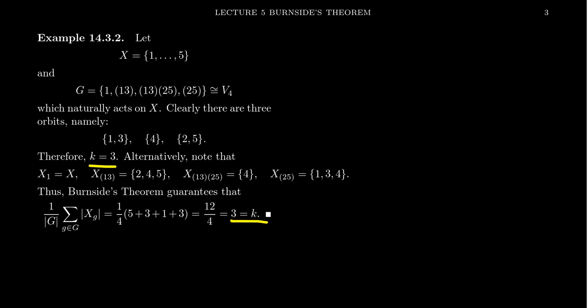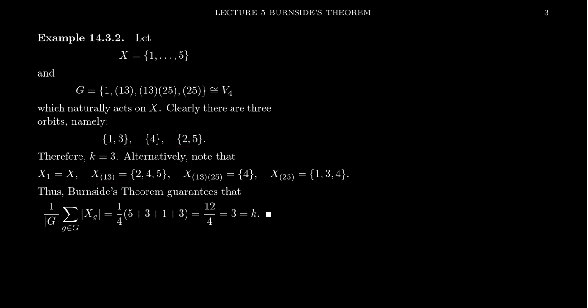This example was very small — it was much easier to count the orbits directly rather than computing all the stable sets, since we only had 3 orbits to begin with. But as group actions get more and more complicated, the Burnside approach to computing the number of orbits can actually be much easier. We'll see that in the next video, where we utilize Burnside's theorem to solve some combinatorial problems.